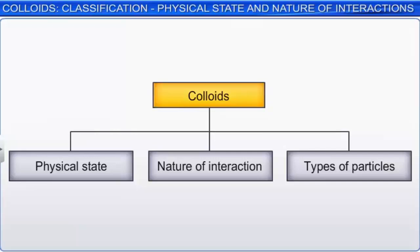Colloids can be classified on the basis of the physical state of the dispersed phase and the dispersion medium, the nature of interaction between the dispersed phase and dispersion medium, and the type of particles of the dispersed phase. Let us first discuss the classification based on the physical state of the dispersed phase and the dispersion medium.